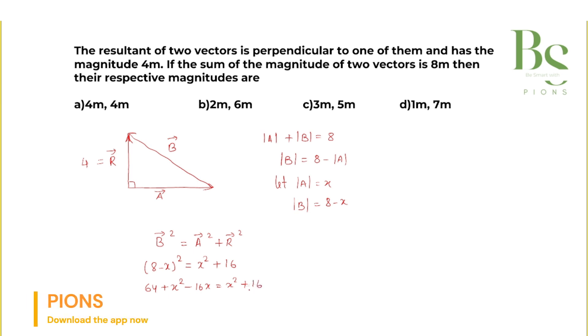Let us cancel out this x² with x². Taking 16 on the left hand side, 64 minus 16 equals 16x, and that is 48 equals 16x. This implies x equals 3, as 48 upon 16 is 3.